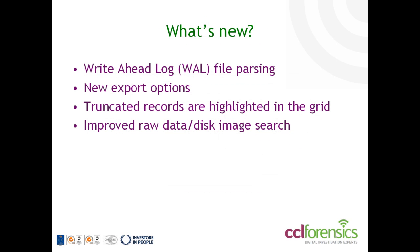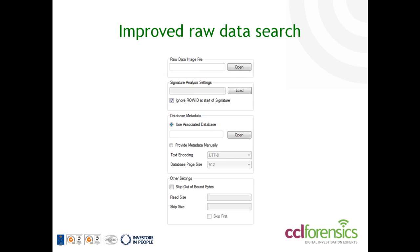We've made some major improvements to the raw data and disk image search facility. There's no longer a necessity to provide an associated database — you can now provide the metadata for the database that you're trying to recover manually. We've also added the facility to skip out-of-bound bytes when reading a raw data file. This has the potential to really improve recovery results when dealing with data that contains areas that are not actually part of the file system, for example raw reads of a flash chip.